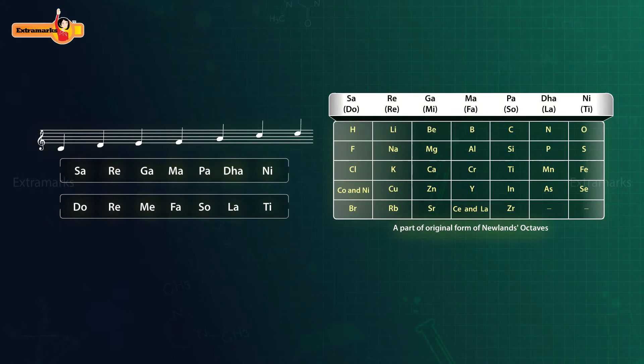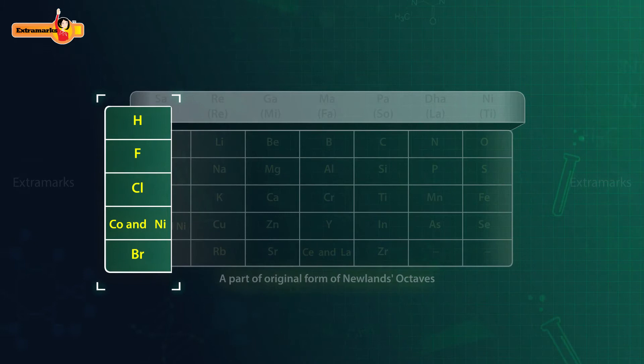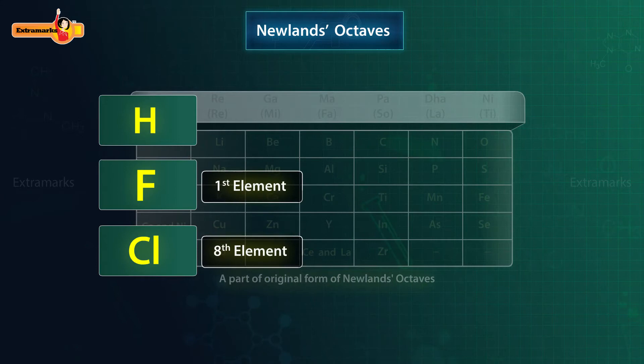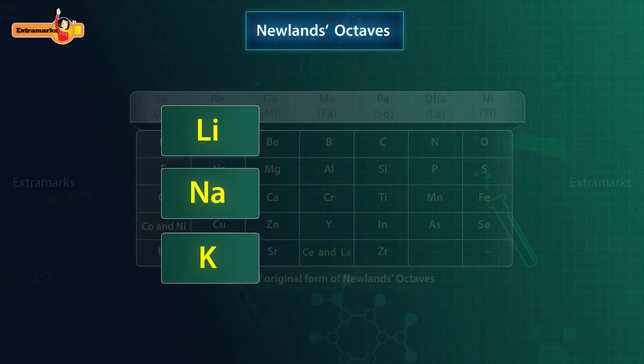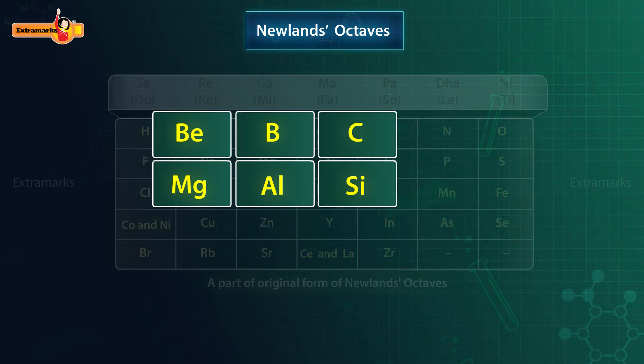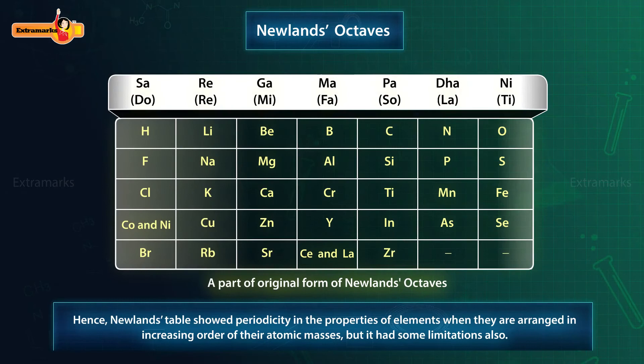Let us first see the first column of Newland's Octaves. The properties of Hydrogen, Fluorine and Chlorine were found to be the same. Fluorine is the eighth element after Hydrogen, and Chlorine is the eighth element after Fluorine. Similarly, Lithium, Sodium and Potassium resemble each other in their properties. The other elements which showed similar properties are Beryllium and Magnesium, Boron and Aluminium, Carbon and Silicon, Nitrogen and Phosphorus, and Oxygen and Sulphur. Hence, Newland's table showed periodicity in the properties of elements when arranged in increasing order of their atomic masses.